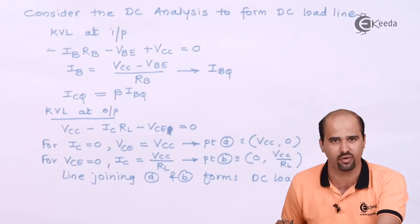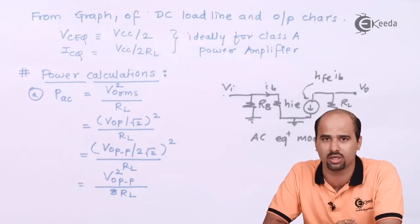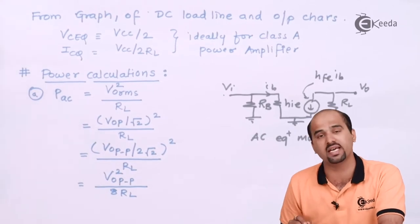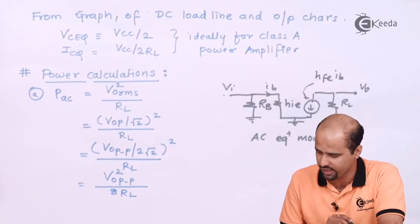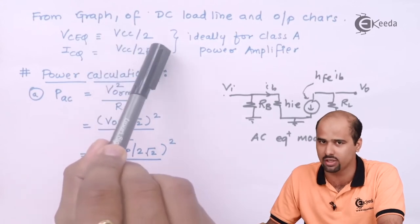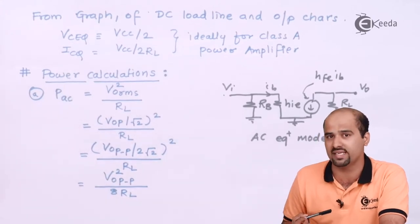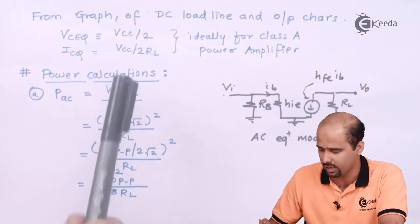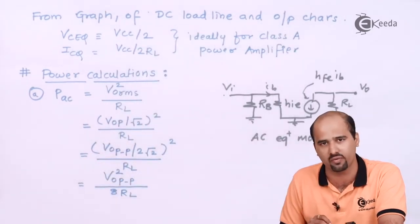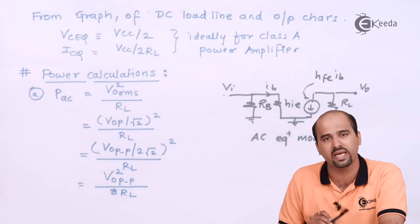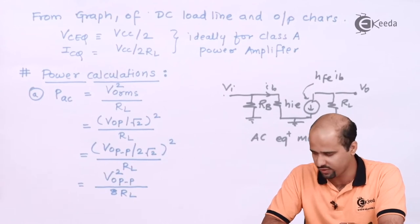For the ideal analysis, VCEQ = VCC / 2 (the midpoint), and ICQ = IC_max / 2. Since IC_max = VCC / RL, we get ICQ = VCC / (2·RL). So ideally, the Q-point values for a Class A power amplifier are expressed in terms of VCC (the DC supply voltage) and RL (the load resistance).